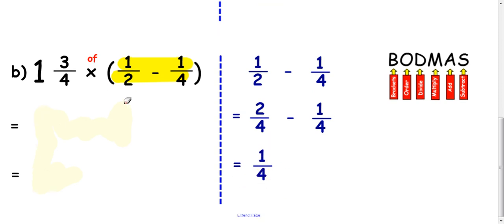Now the other thing I'm going to do here is I'm going to change this into a top-heavy fraction. So I'm going to do 4 times 1, add 3, and I'm going to make that 7 quarters. It's just easier to deal with when I'm doing this multiplication. So 7 quarters, and we're saying that this bit comes to 1 quarter. So I'm going to times that. So top numbers multiplied give you 7. Bottom numbers multiplied give you 16, so 7 sixteenths. That's your answer.